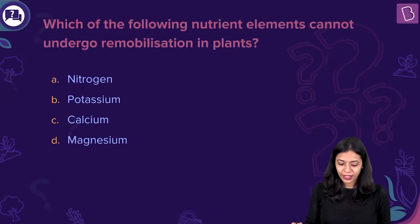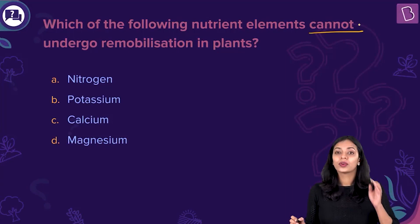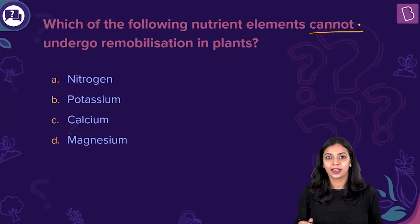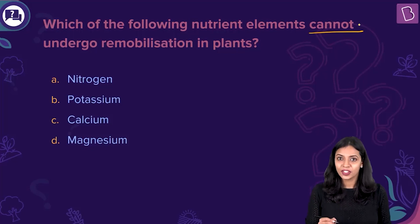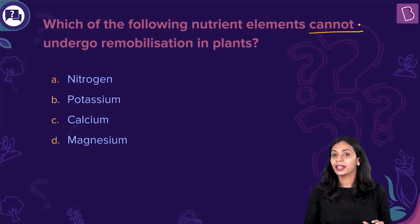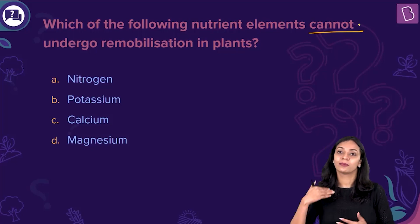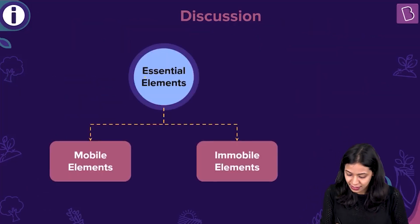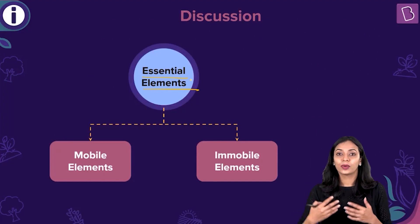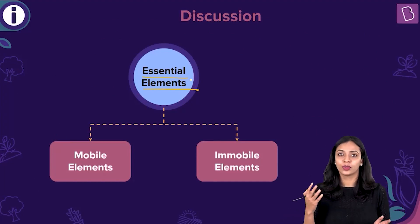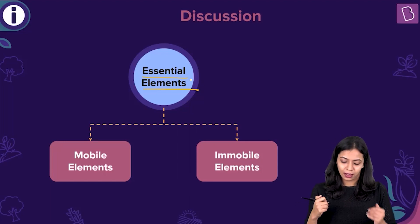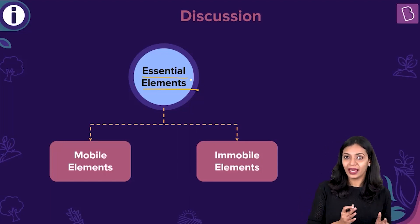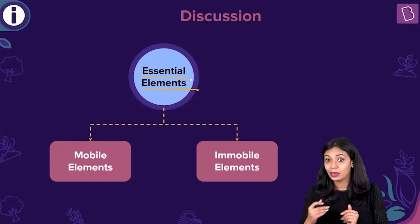Here's the next question: Which of the following nutrient elements cannot undergo remobilization in plants? The options are nitrogen, potassium, calcium, and magnesium. Plants require certain essential elements to grow and develop normally. Among these essential elements, some are considered to be mobile elements and some are considered to be immobile elements.